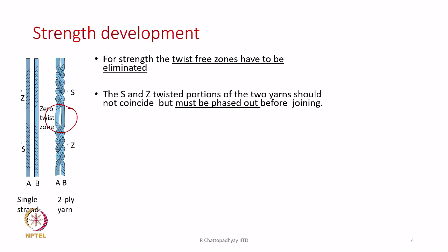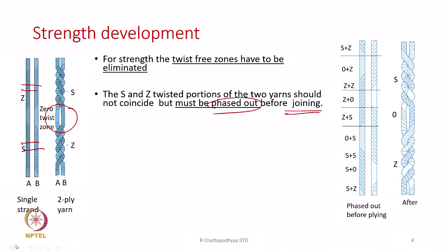The S and Z twisted portions of the two yarns should not coincide and must be phased out before joining. That is the solution: we must make sure that Z and Z, S and S, do not coincide before they get twisted around each other. To avoid this kind of situation we have to go for phasing out. Phasing out means that one yarn has to be shifted relative to the other, so that Z-Z portions and S-S portions do not come next to each other.